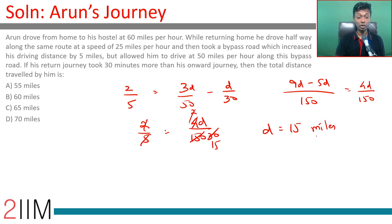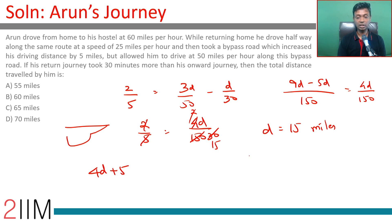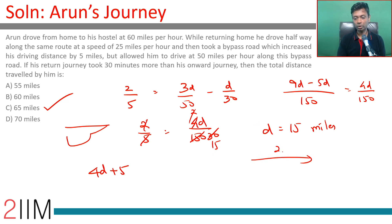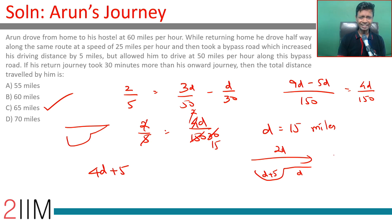Remember, we are talking about the total journey. He travelled 2D on the onward trip, and then D plus D plus 5 on the return journey, so the total is 4D plus 5. Substituting D equals 15: 4 times 15 plus 5 equals 60 plus 5 equals 65 miles. So the total distance travelled by him is 65 miles. Construct the right equation, and then this becomes a very routine question.